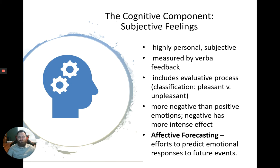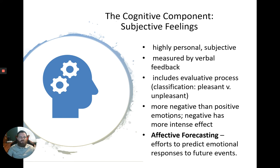Another area here is something called affective forecasting. Think about the future — how are you going to respond emotionally to certain events? Can you predict your emotional response to things like falling in love, getting fired from your job, or experiencing the loss of a loved one or pet? A lot of people tend to predict their future responses to emotional events as being very extreme and severe, especially for the negative ones. But the reality is they do end up getting over those things. It just takes time.